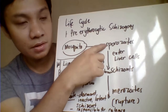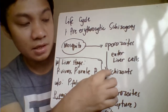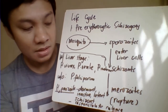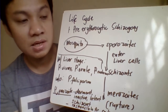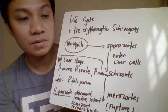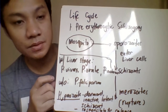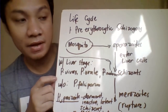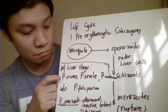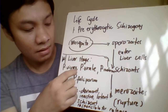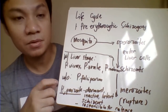Once sporozoites are introduced, they enter liver cells or hepatocytes. Inside, they develop into schizonts and later into merozoites. As they mature, the liver cells die and the merozoites rupture and are released. Species having a hepatic stage — capable of invading the liver — include Plasmodium vivax, ovale, and malariae. Plasmodium falciparum does not have a liver stage.